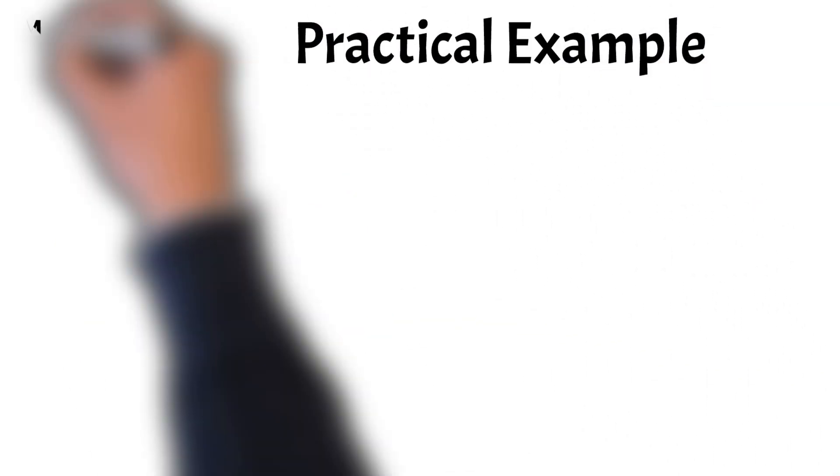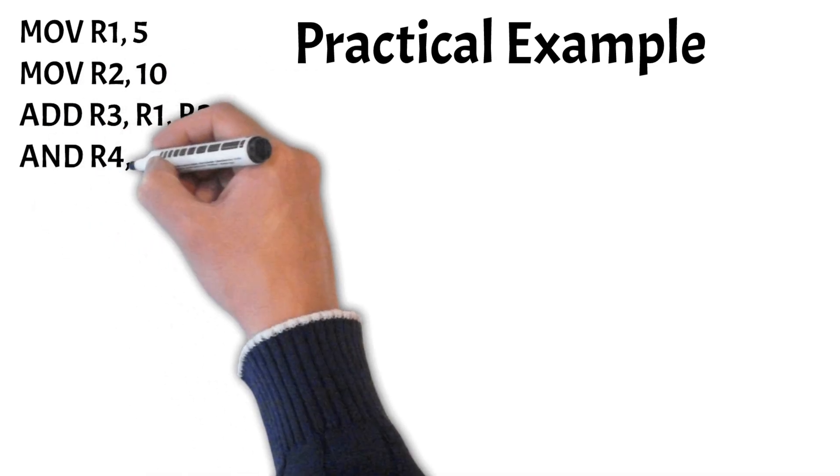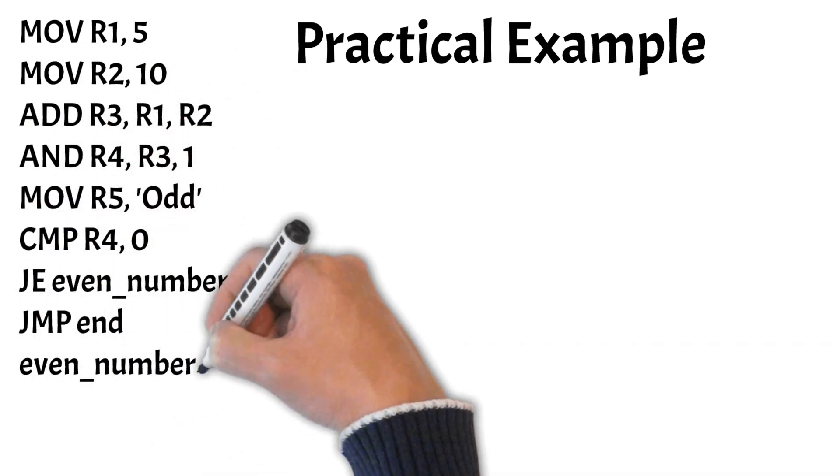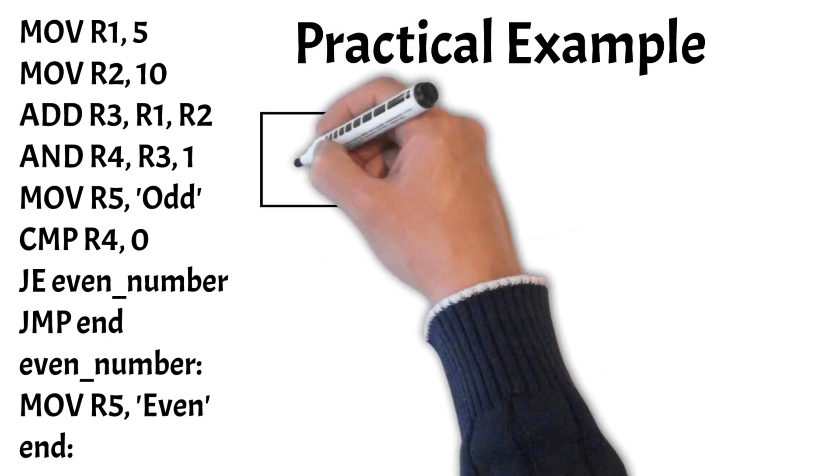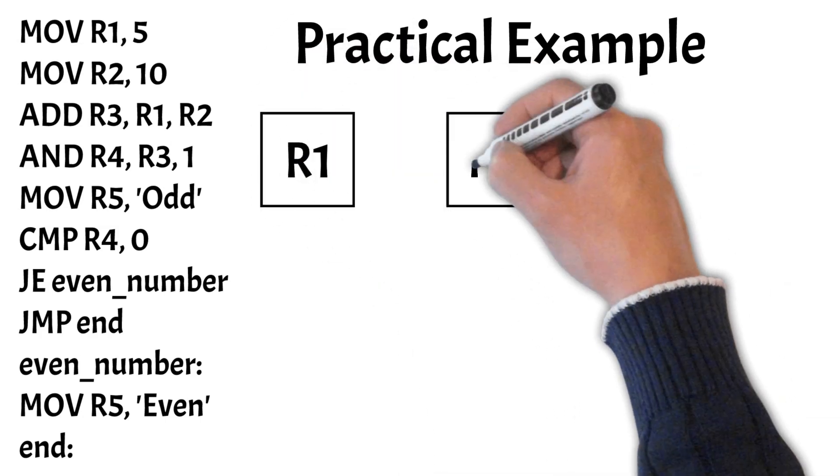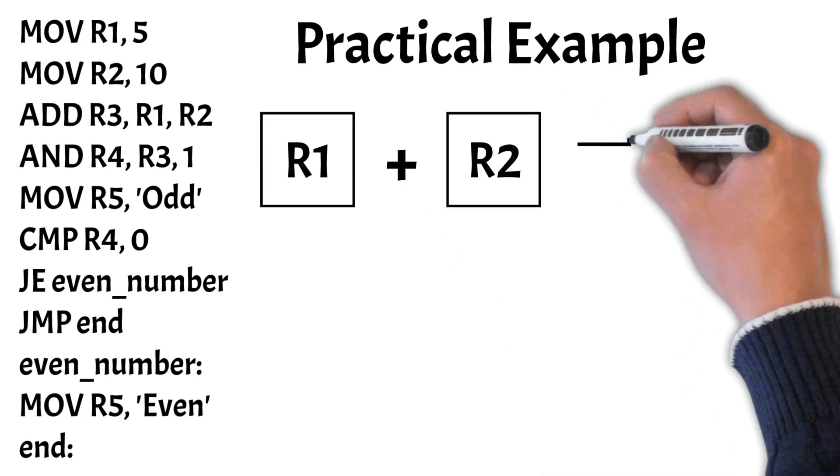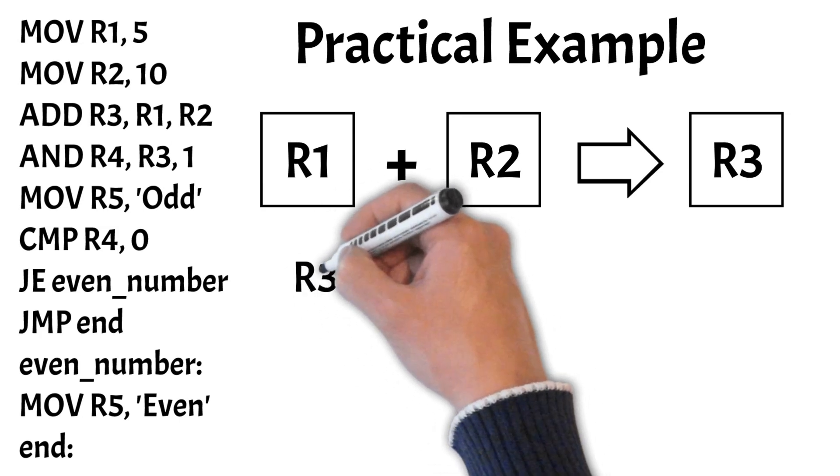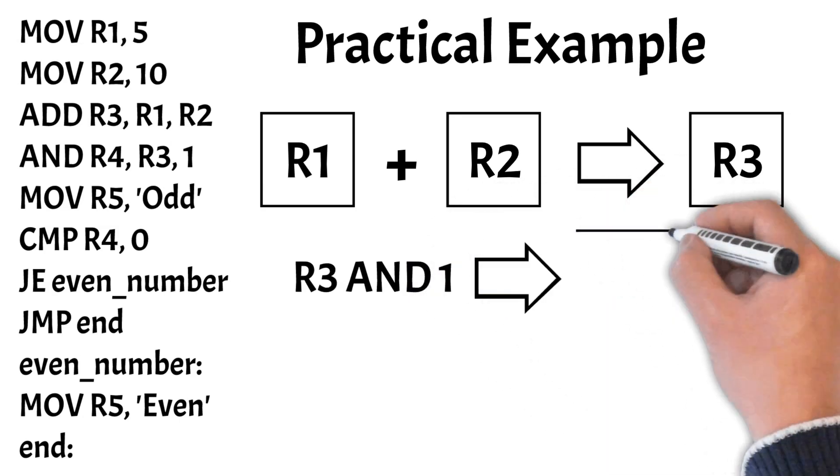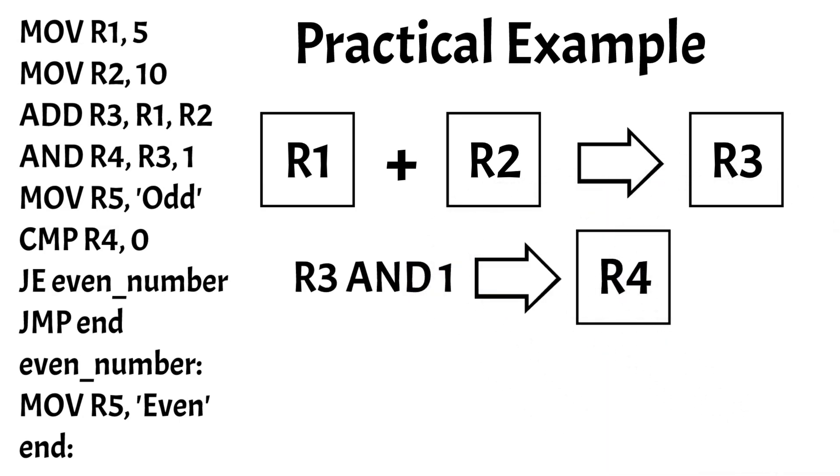Now that we've learned about the basic instructions and how they are executed, let's take a look at a practical code example. In this assembly code example, we start by loading the values 5 and 10 into registers R1 and R2, respectively. The ADD instruction then combines these two values and stores the result in register R3. To determine whether the result is even or odd, we perform a bitwise AND operation with 1 and store the outcome in R4.